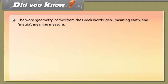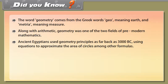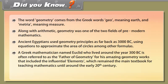The word geometry comes from the Greek words 'geo' meaning earth and 'metria' meaning measure. Along with arithmetic, geometry was one of the two fields of pre-modern mathematics. Ancient Egyptians used geometry principles as far back as 3000 BC, using equations to approximate the area of circles. A Greek mathematician named Euclid, who lived around 300 BC, is often referred to as the father of geometry for his influential work 'Elements', which remained the main mathematics textbook until around the early 20th century.